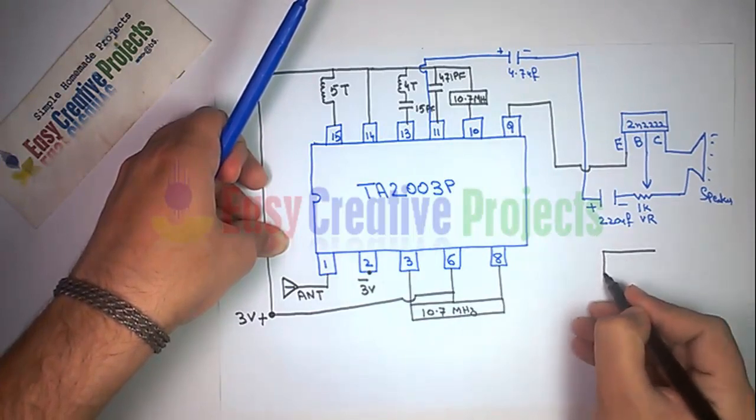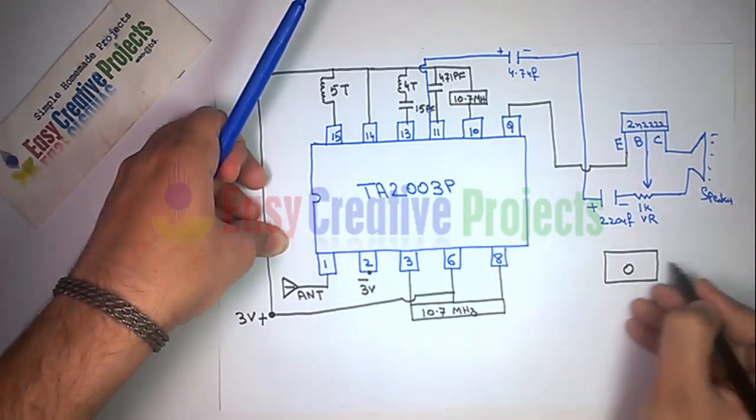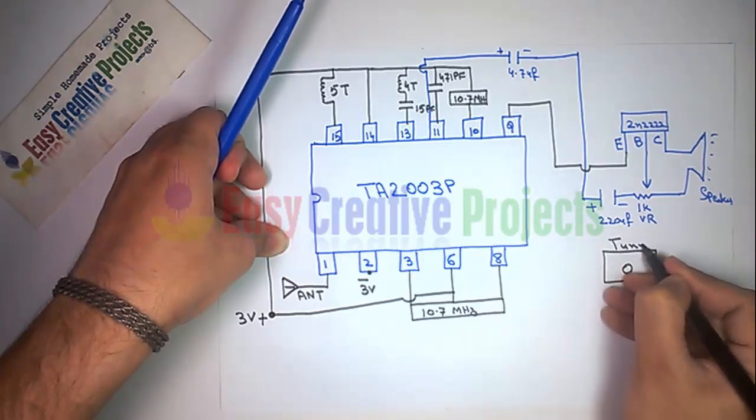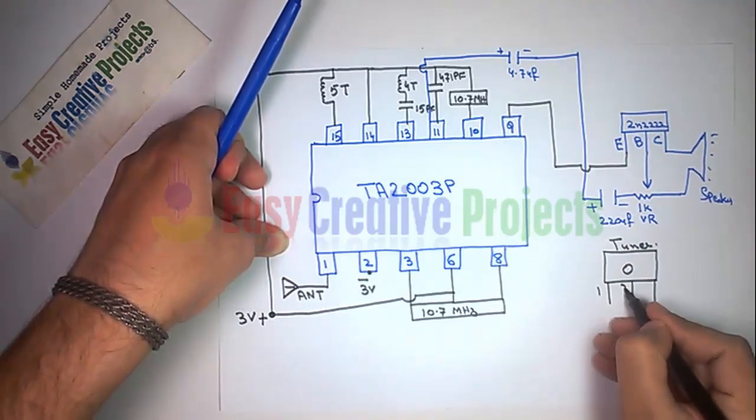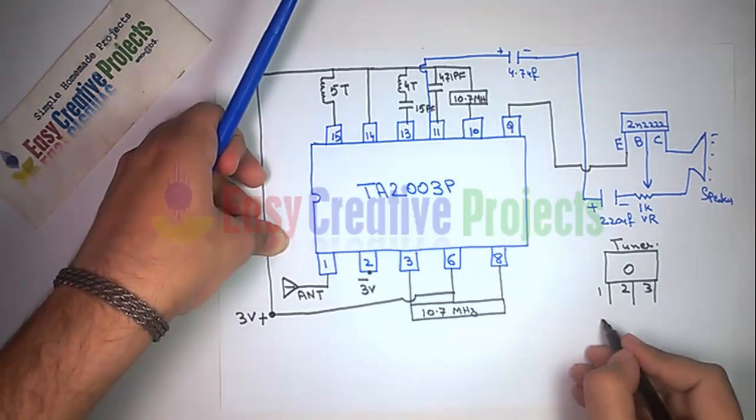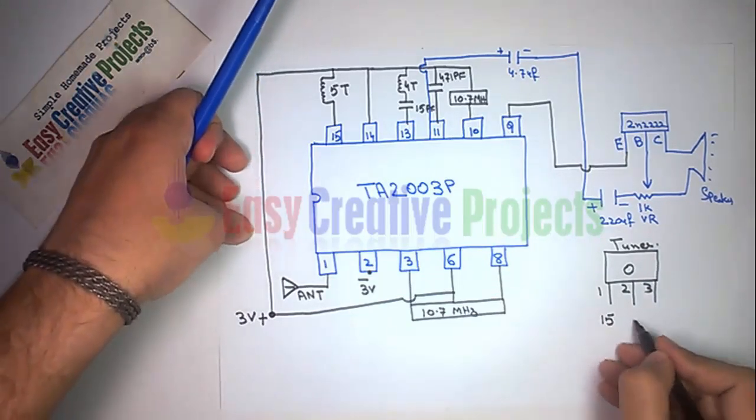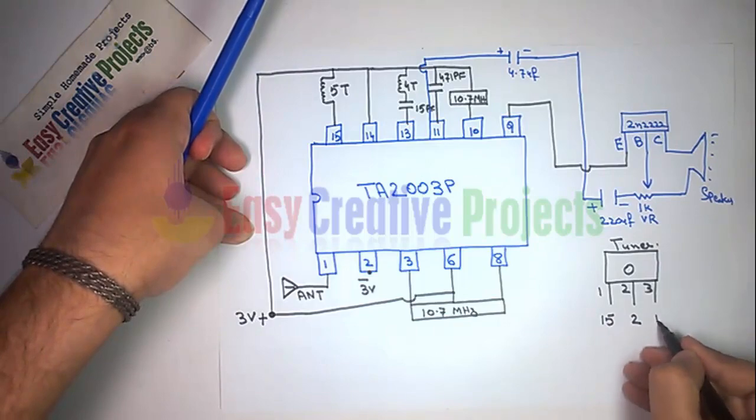Variable capacitor or tuner has 3 pins. Connect first pin with pin 15. Second pin connect with pin 2 of IC. And third pin connect with 15pF capacitor.